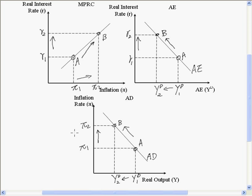The only difference between the AD curve and the AE curve is what's on the vertical axis. It's through the monetary policy reaction curve that we link the inflation rate change to the real interest rate change, and finally to the change in quantity demanded on aggregate output — thus deriving the AD curve.